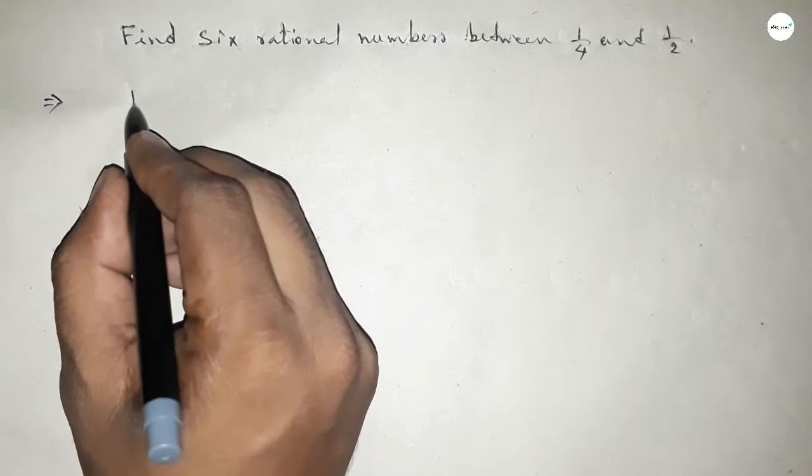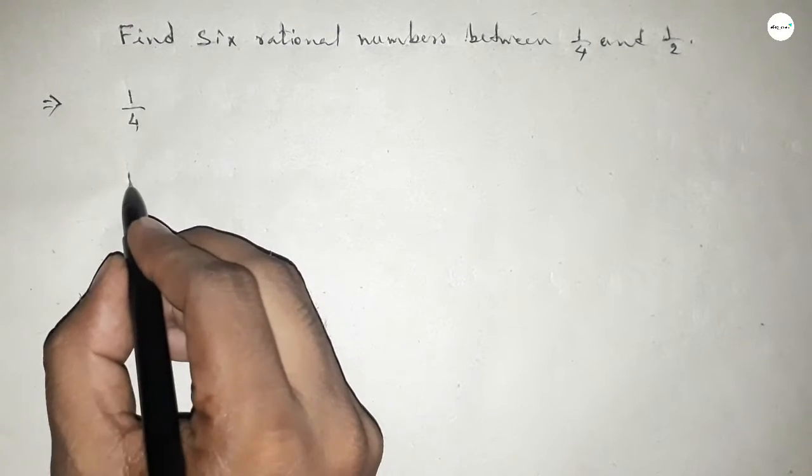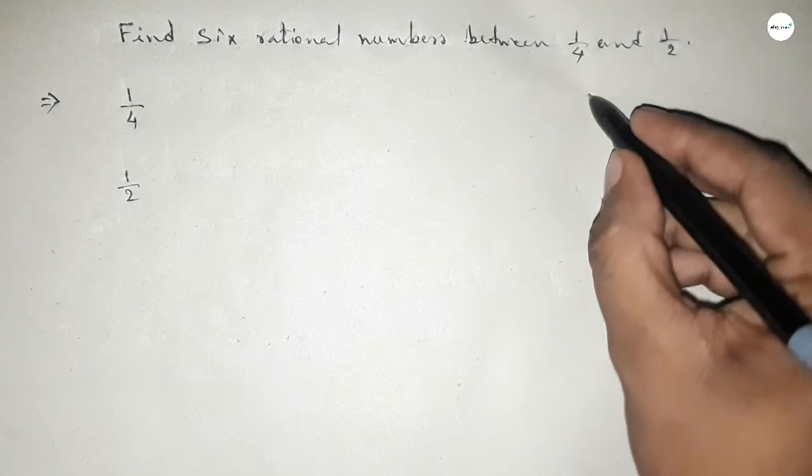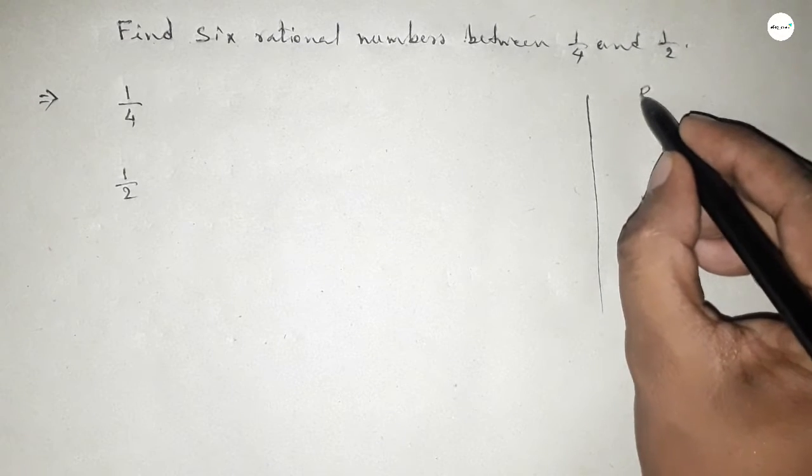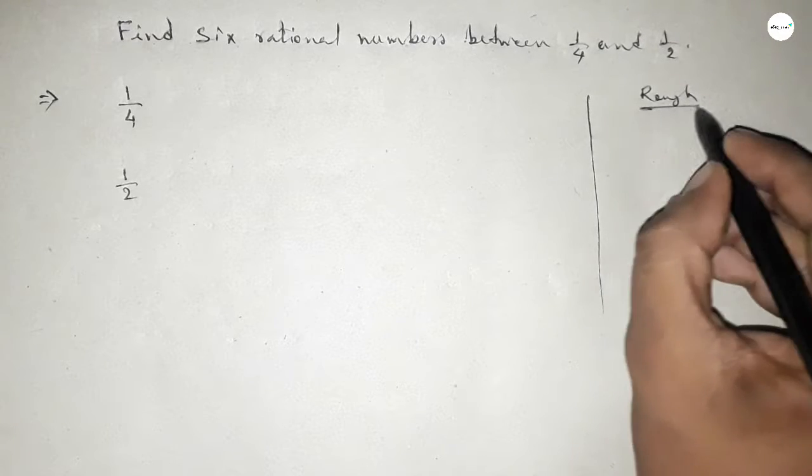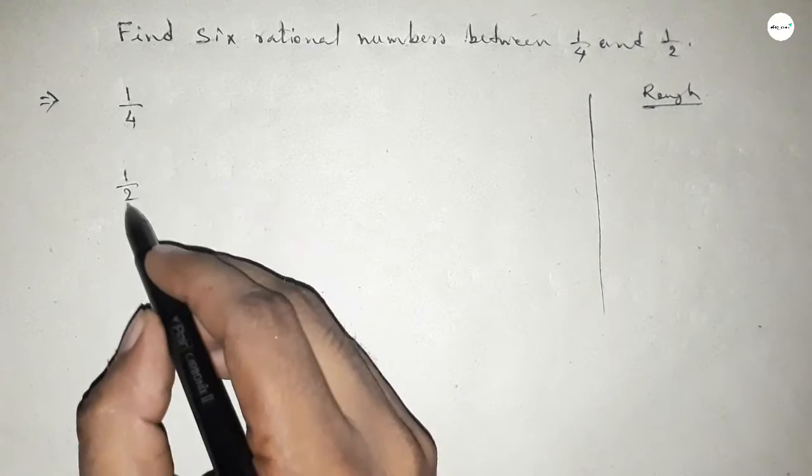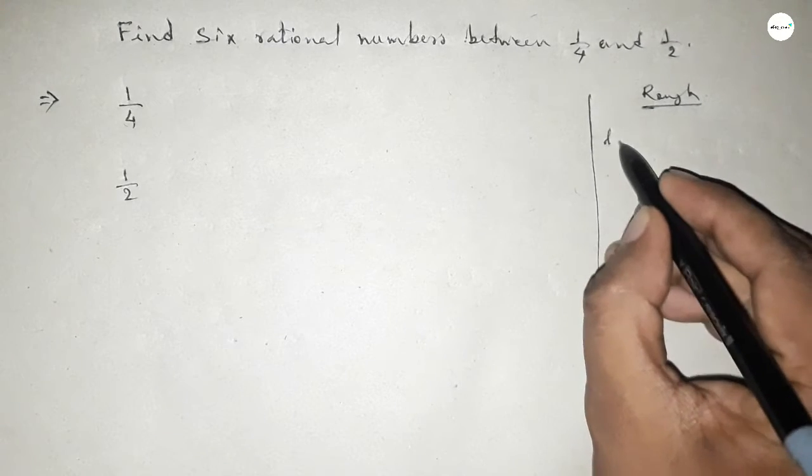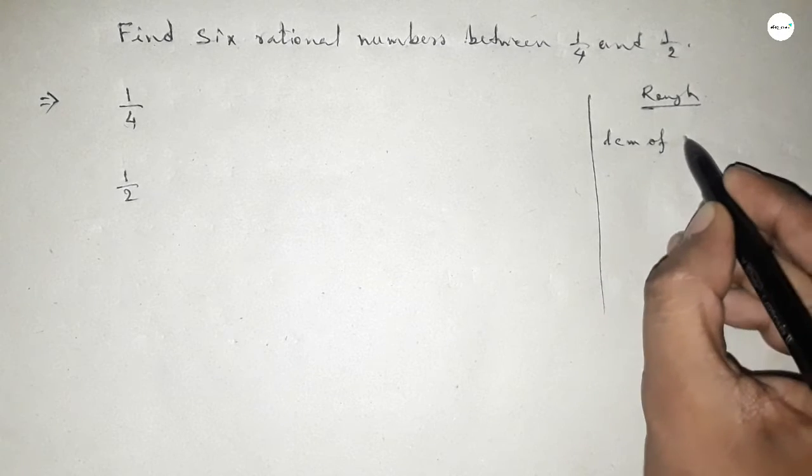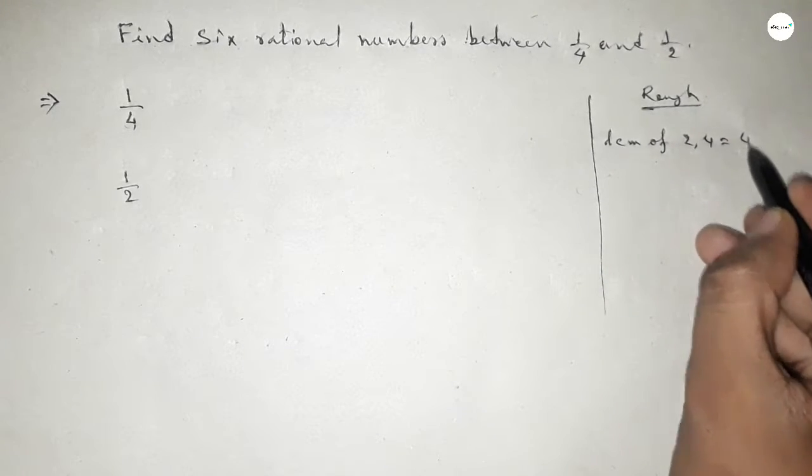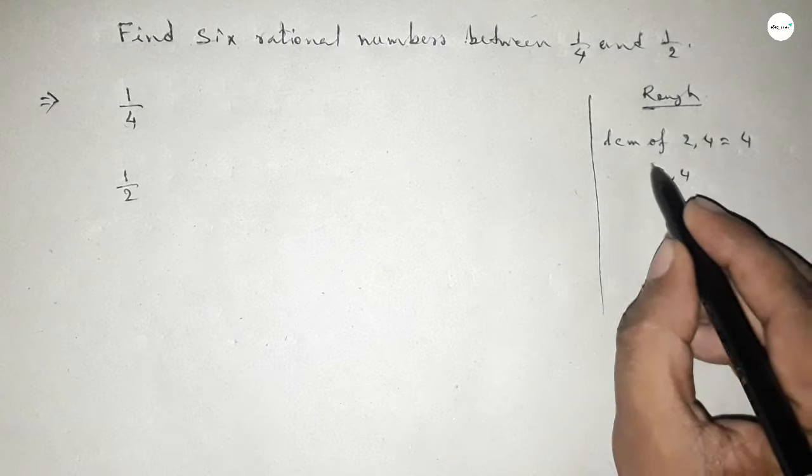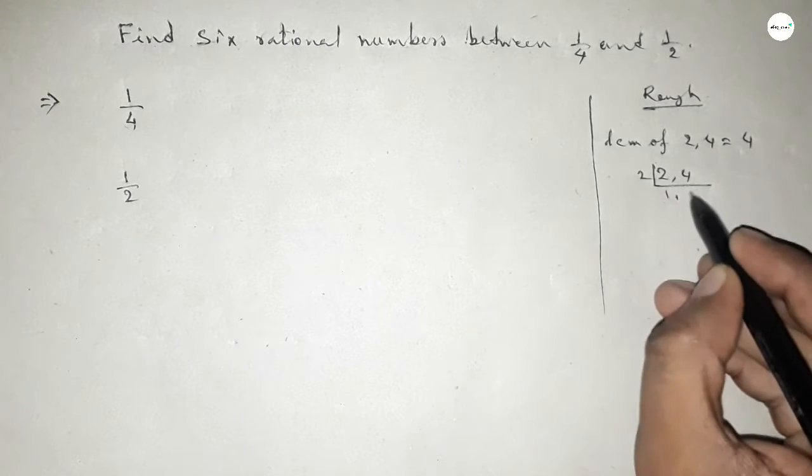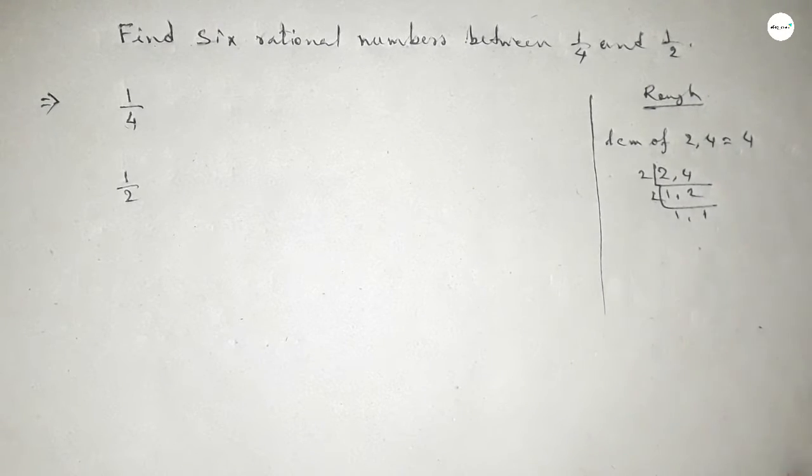Now discussing some important calculations here. The denominators of both are not the same, so first we have to find out the LCM of 4 and 2, and their LCM is 4. If we factorize 2 and 4, first divided by 2, then again divided by 2, then their product is 4.